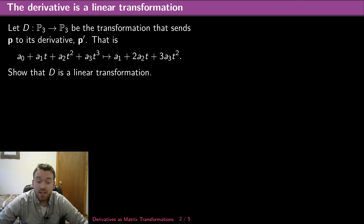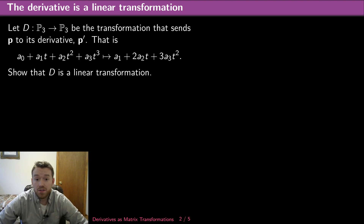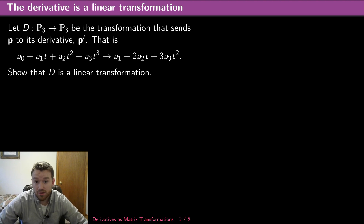D is going to be the transformation that sends P to its derivative. That means by the power rule that a cubic is going to be sent to a1 + 2a2·t + 3a3·t². So it's just the normal derivative, the power rule for polynomials. In general, if I'm trying to show that something is a linear transformation, I want to show that it splits over sums and that I can factor out constants.